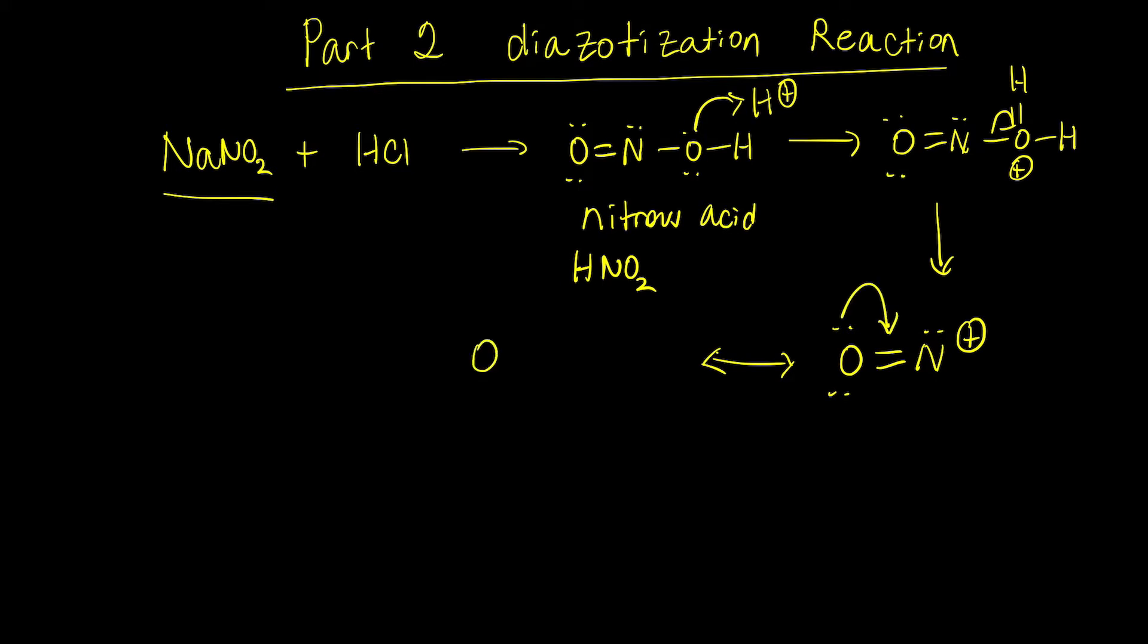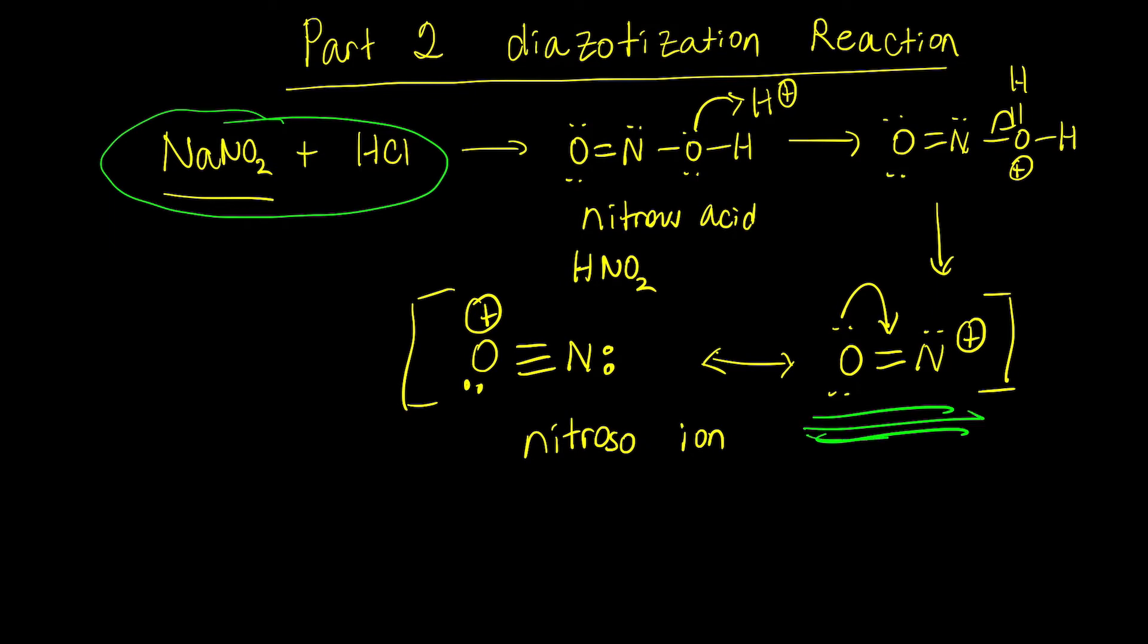This creature is resonance stabilized. We can use these lone pairs on oxygen to come in, and this creature right here is called the nitroso ion. I will be using this resonance form in the rest of the mechanism. You're forming the nitroso ion in the cold ice water mixture containing hydrochloric acid.